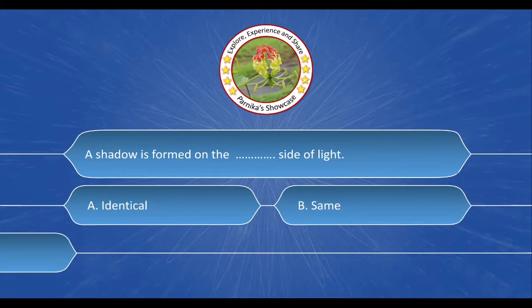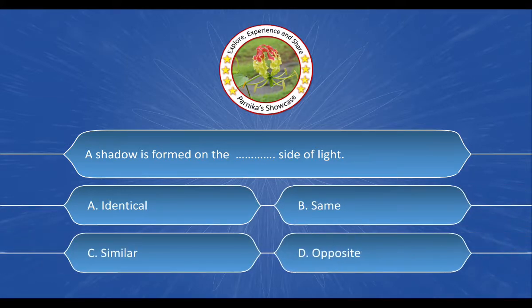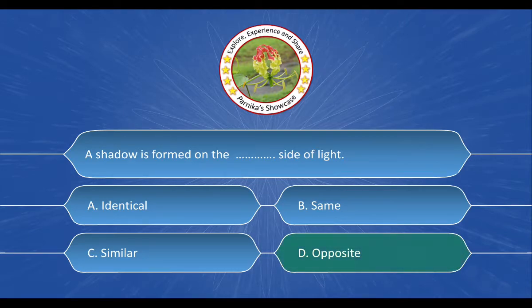Next question: A shadow is formed on the ___ side of light. And the correct answer is option D. Opposite.